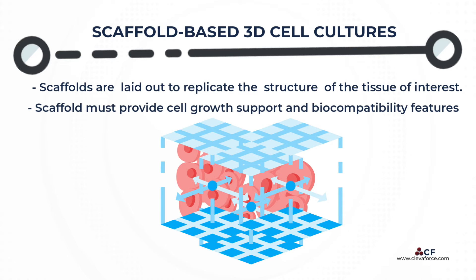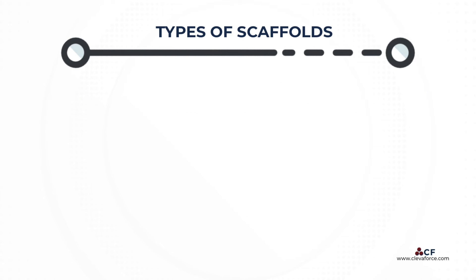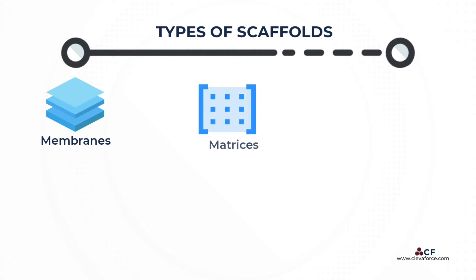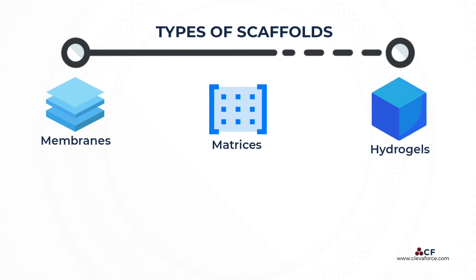To avoid any hindrances, the scaffold must provide cell growth support and biocompatibility features, regardless of type. Scaffolds that are currently manufactured include membranes, matrices, and, most notably, hydrogels with excellent properties.